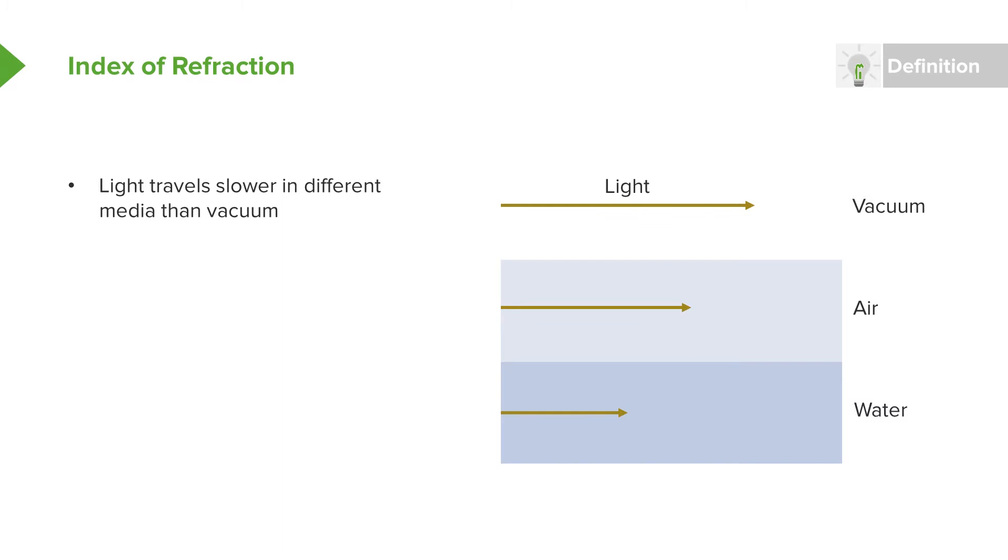We know that light isn't always traveling in a pure vacuum. Usually it's traveling through something like air or water. Through each of these different media, the light's speed will actually be different as it interacts with all the particles in that medium.